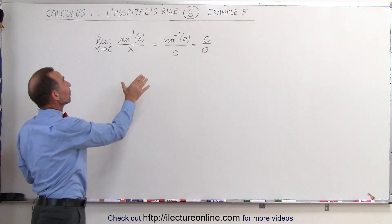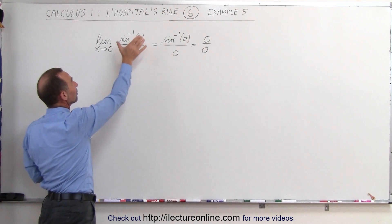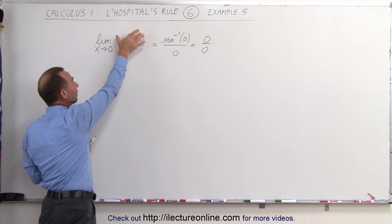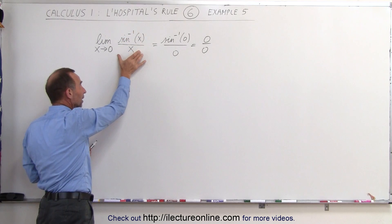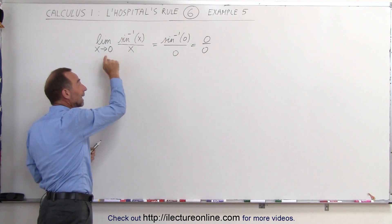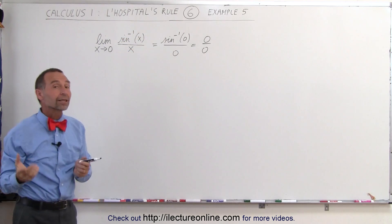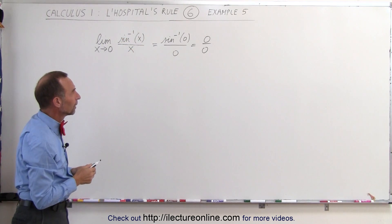The idea here is to take the derivative of the numerator, the derivative of the denominator, and then again evaluate the limit as x approaches 0.